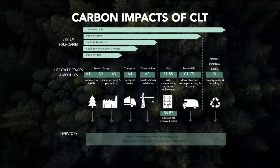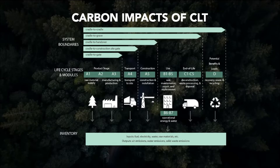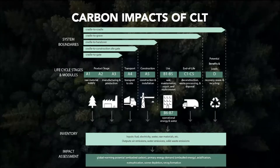All of these stages have their inventory, which includes various inputs — fuel, electricity, water, raw materials — and various outputs such as emissions, water emissions, and solid waste. In many LCA studies you're given a variety of impact assessment categories: global warming potential, primary energy demand, etc. For this study in particular, we focused on GWP, which is often translated as a measurement of embodied carbon.